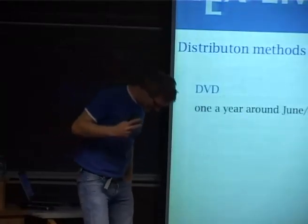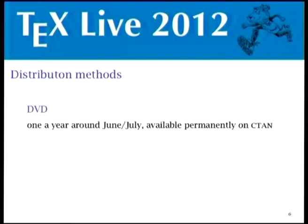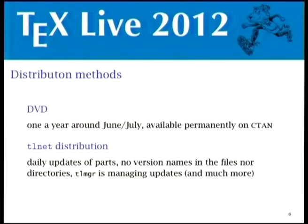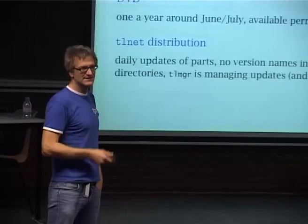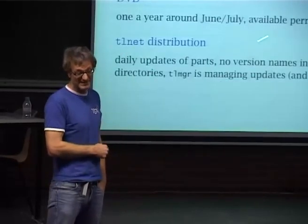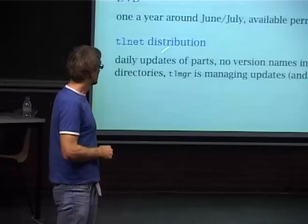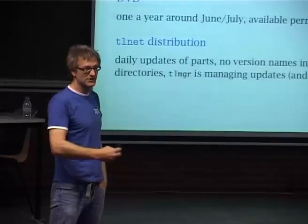What are our distribution channels? We have one DVD per year, normally around June, which stays valid for about one year. But most people now use the TeX Live network distribution - you just download a very small installer written in Perl. For Windows we have to ship the Perl interpreter and the full installation. This changes daily on the CTAN network, and this is also where the TeX Live manager pulls updates from.